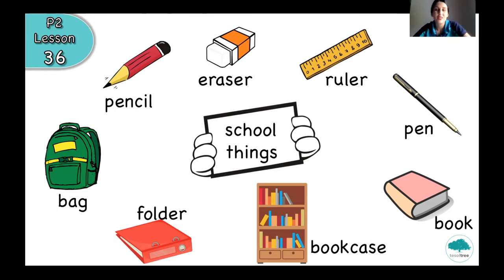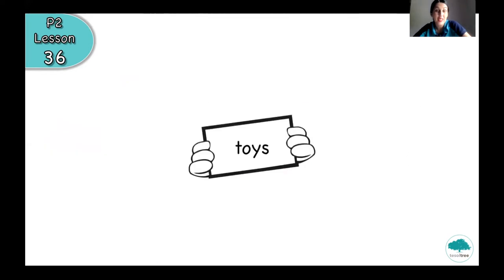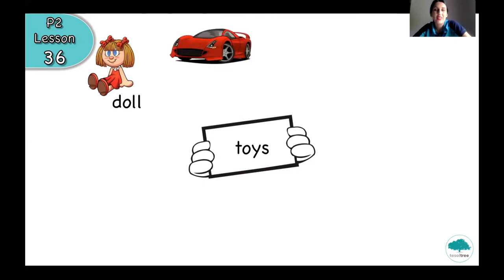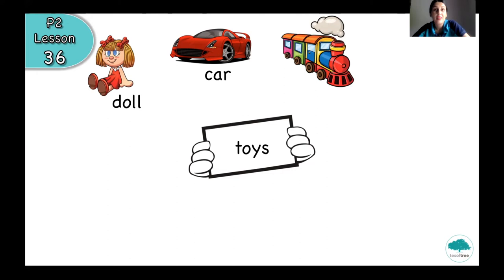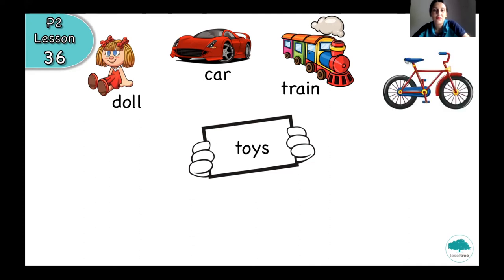Great job! Now we reviewed our school things. Let's continue — toys! Do you remember? Let's check together. Girls like to play with a doll — it's a doll, very beautiful. Now, what a cool red car — we can drive a car, it's a toy. And what about this? Such a colorful train! Next one: bike. Very good. And continue — what's the name for this toy? It's a scooter.